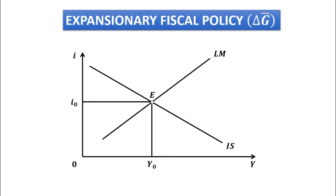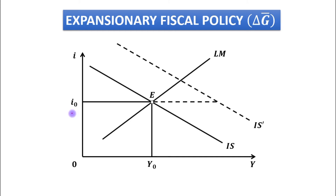Now let us see the case of expansionary fiscal policy. Suppose government expenditure increases by changing g-bar. In that case the IS curve will be shifted rightwards. As you can see in the figure, the IS curve has been shifted to IS-dash. At the same interest rate oi0, equilibrium income will rise up to the level oi double-dash, and the rise in equilibrium income is y0 to y double-dash.